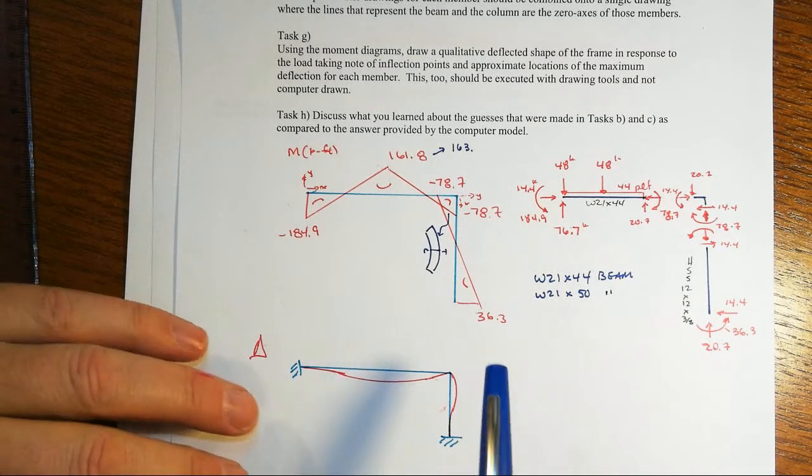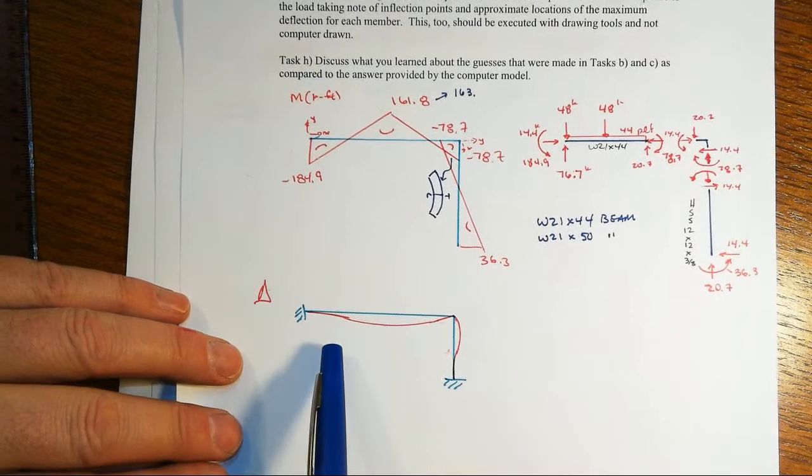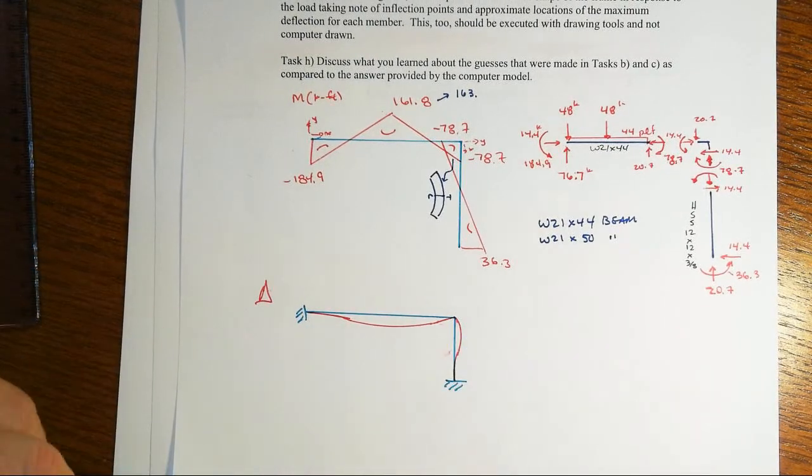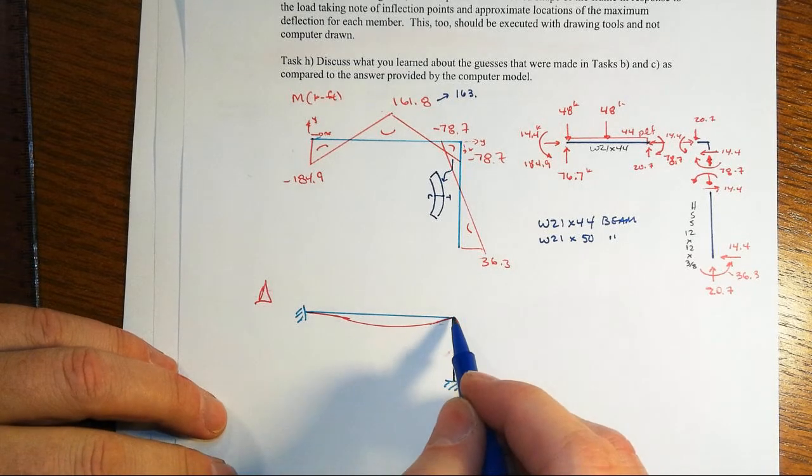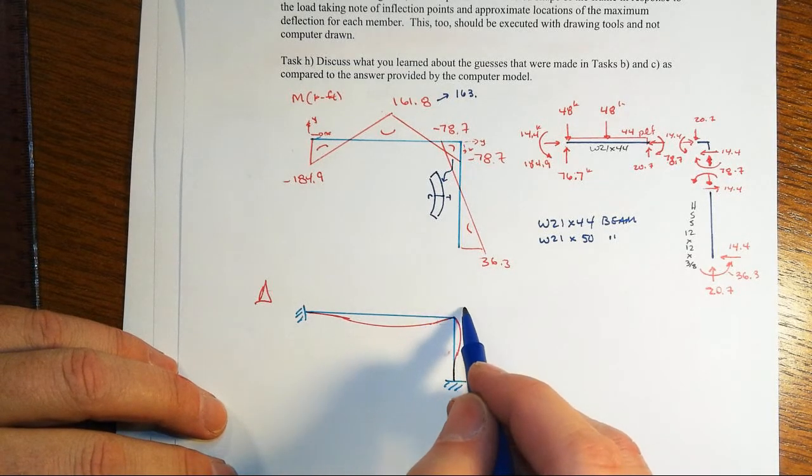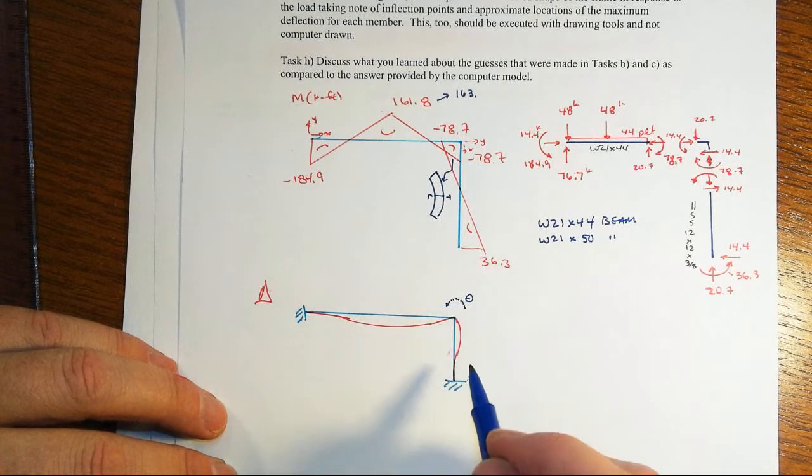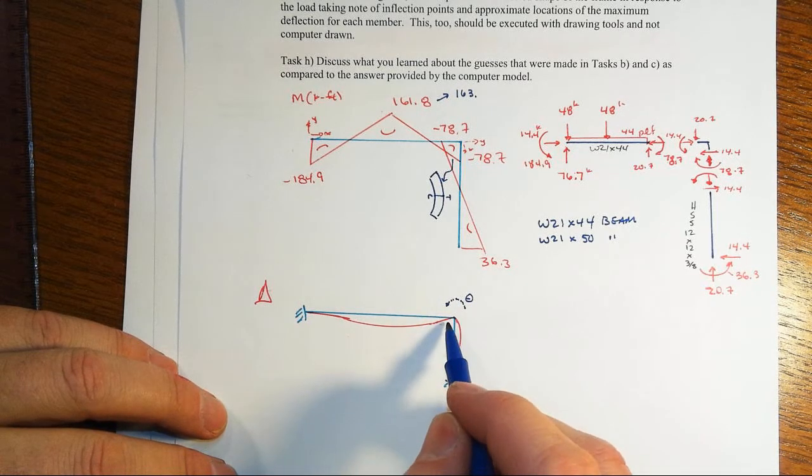With that moment diagram then we go back and we draw our qualitative deflected shape and one of the key things here is that this joint at the upper right, the beam column joint does rotate in a counterclockwise fashion. Right, but it started off at 90 degrees, it needs to remain at 90 degrees.